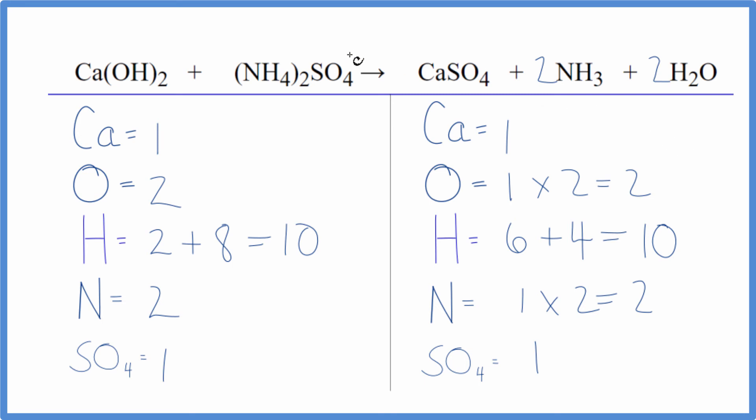A few things we did here. One, it's a really good idea to count the polyatomic ions as just one thing if they appear on both sides. That saves a lot of time. We can't do it with the hydroxide or with the ammonium because they don't show up over here, but the sulfate, that works really well.